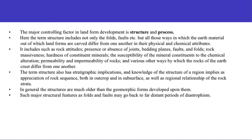Climatic conditions like temperature, precipitation, soil, and humidity also have an effect on the rate of processes. Take the example: water seeps down easily through permeable sandstone rock, due to which the surface flow is less and the number of streams is also less.